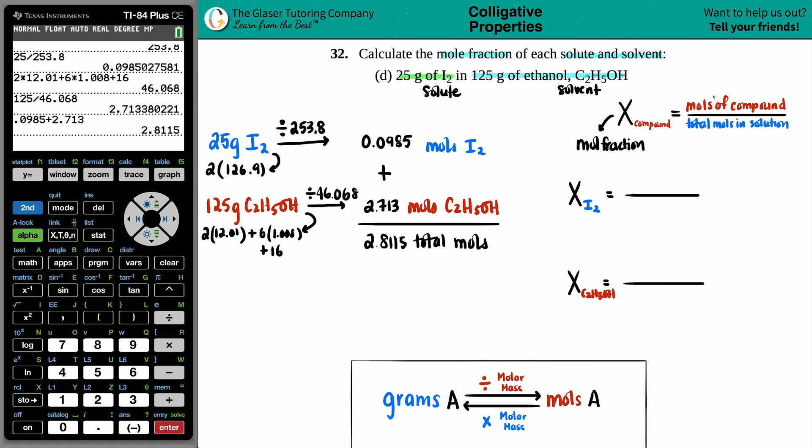So for the I2, it's the moles of that compound. So it's the 0.0985 divided by the total moles, which is 2.8115. And then for the moles of the ethanol, those moles were 2.713 divided by the total of 2.8115.